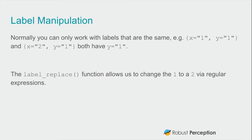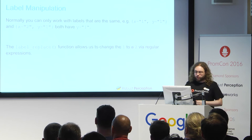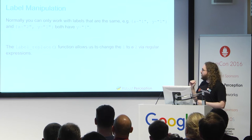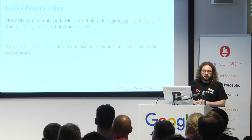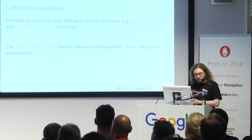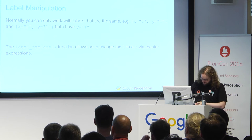Label manipulation turns out to be kind of important. Normally you can only work with labels that are the same and do relational algebra based on them — for example with x equals one, y equals one, and x equals two, y equals two, because both have y equals one. The label_replace function allows us to change the one into a two via regular expressions. Obviously regular expressions are a dirty word in formal computer science, but you do what you must.